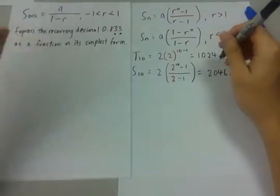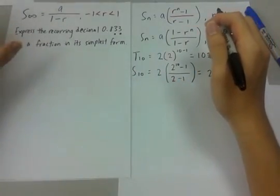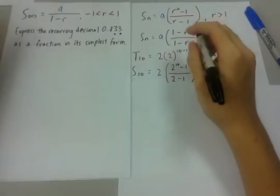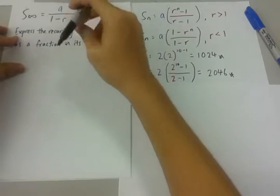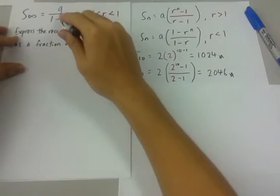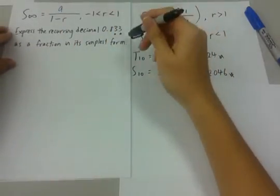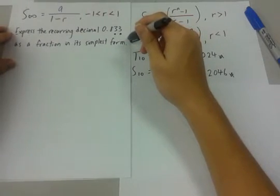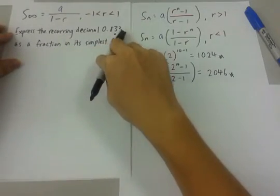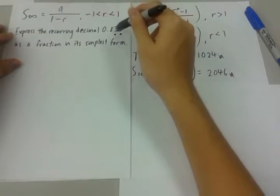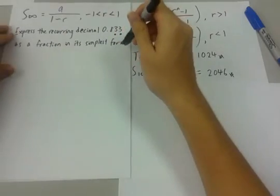The sum of infinity, sum to infinity, is denoted, the general formula is A, first number, over 1 minus R, the common ratio. So this is a very typical question in examinations. Express the recurring decimal 0.8333... I use these two dots to denote that 3 is recurring. That means it's 0.8333... as a fraction in its simplest form.